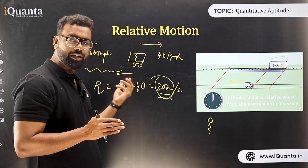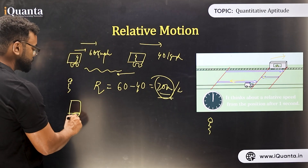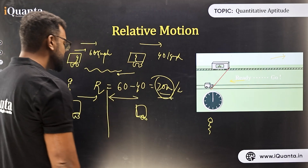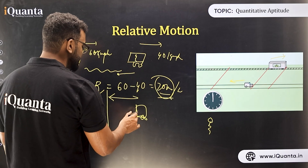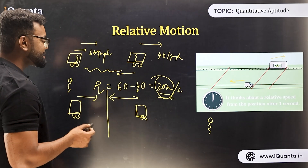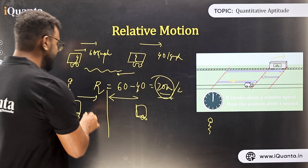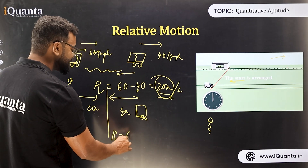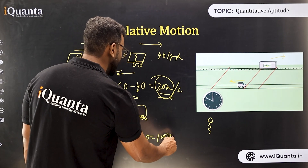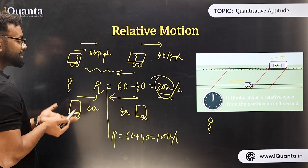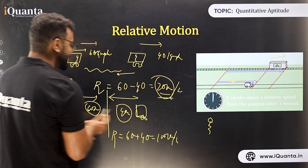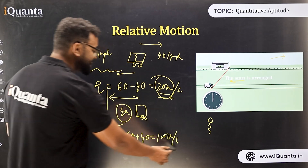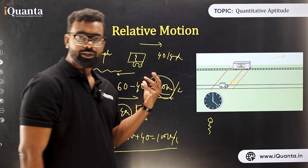Now if they are moving in opposite directions — one train moving this way and the other moving that way — the relative speed is 60 plus 40, which is 100 kmph. When moving towards each other, the speeds are added. The distance between them is also traveled at this combined relative speed of 100 kmph.